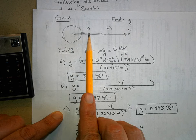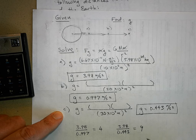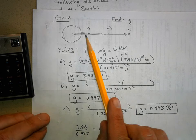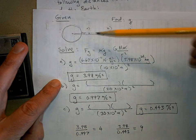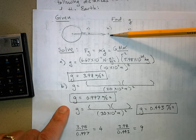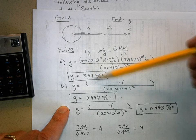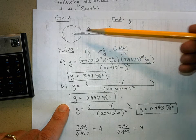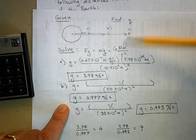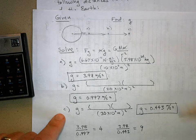One thing you could have done if you see a pattern like this: if you see that you're twice as far away from the center of the planet, you can go through all the math again if you want, or you could just divide this by 4. So take 3.98 and divide it by 4 and you'll get this. Or if you're three times as far away from the planet, instead of going through all the math, you can just take your original answer and divide it by 9 and you'll get this answer.